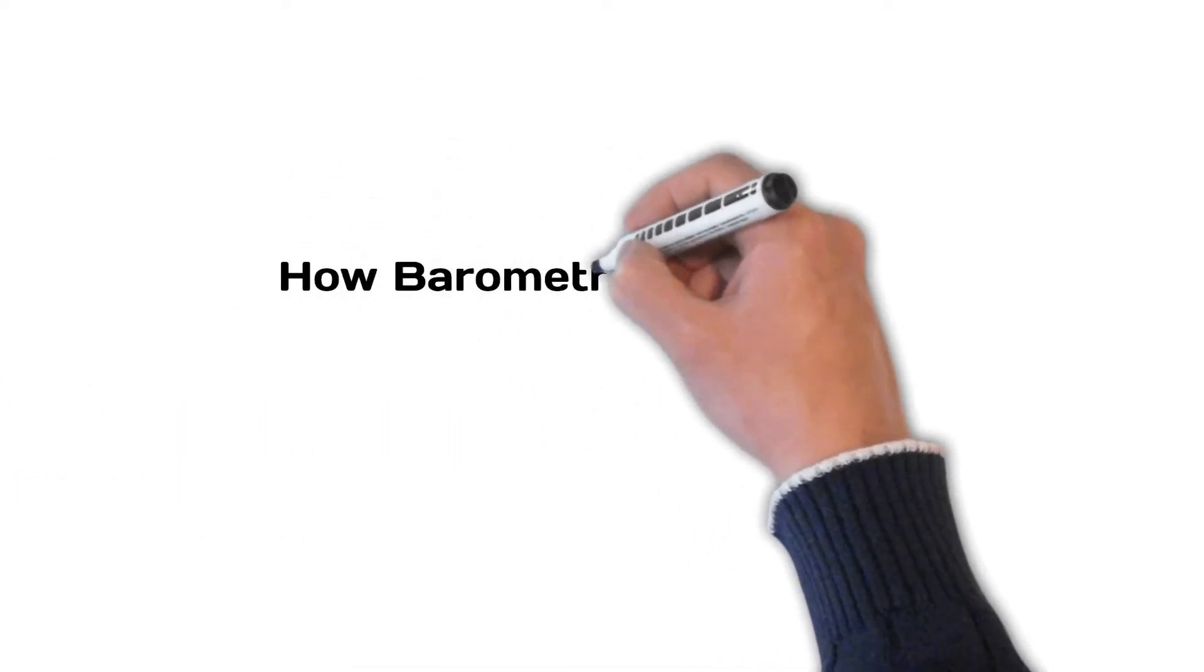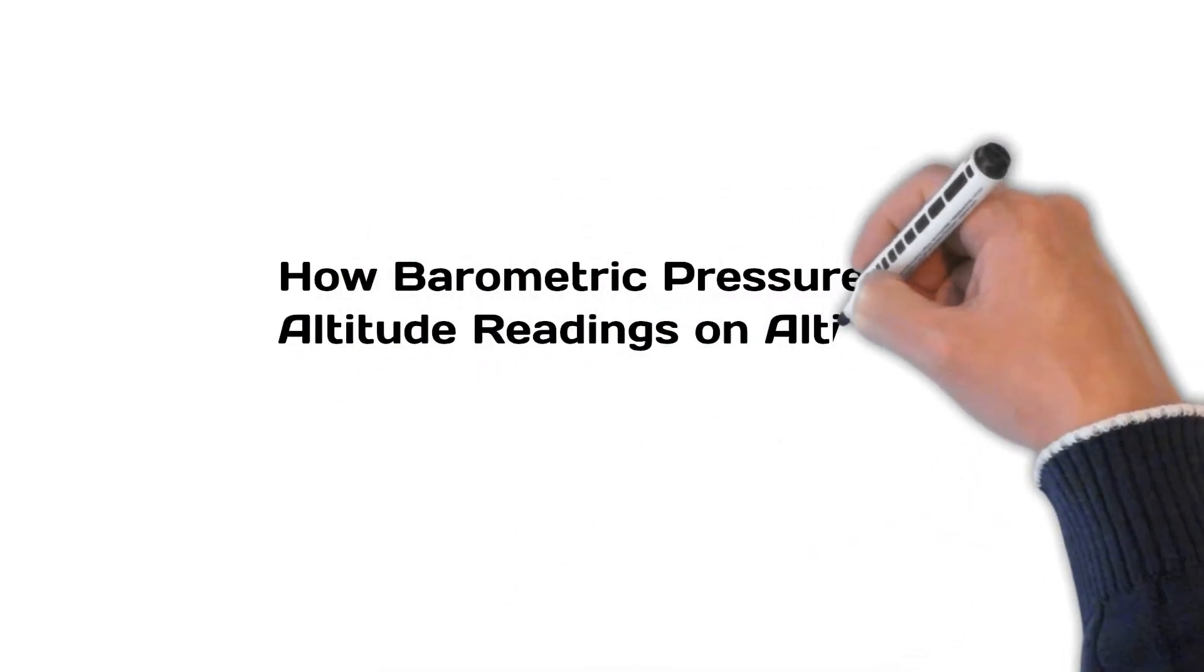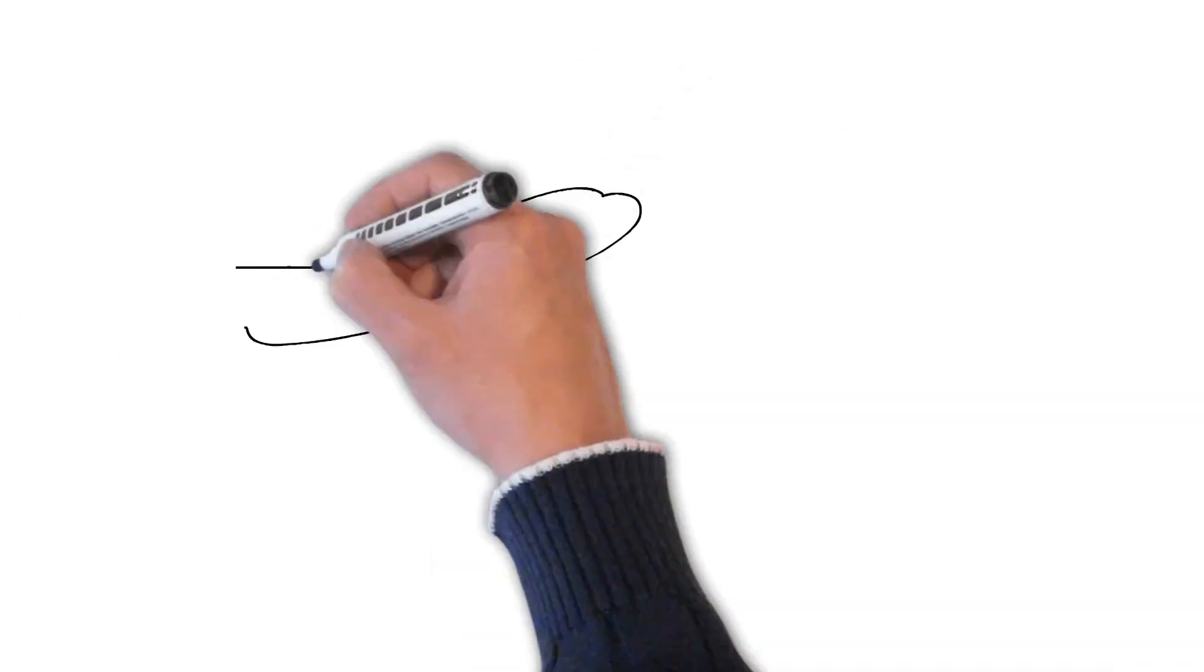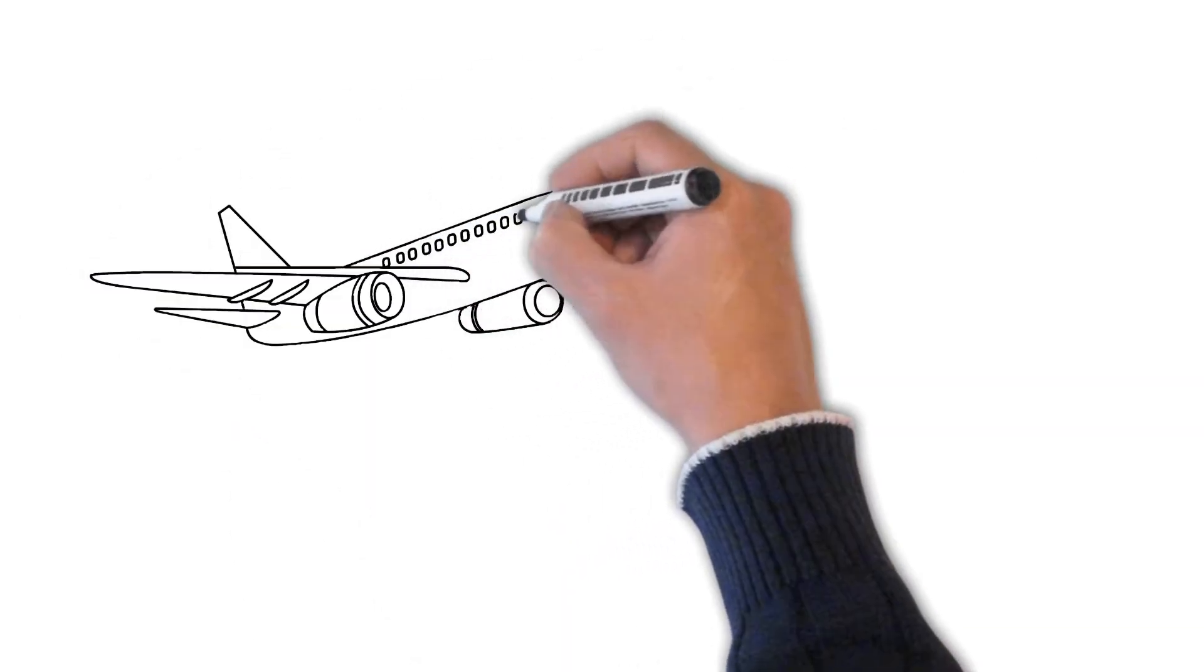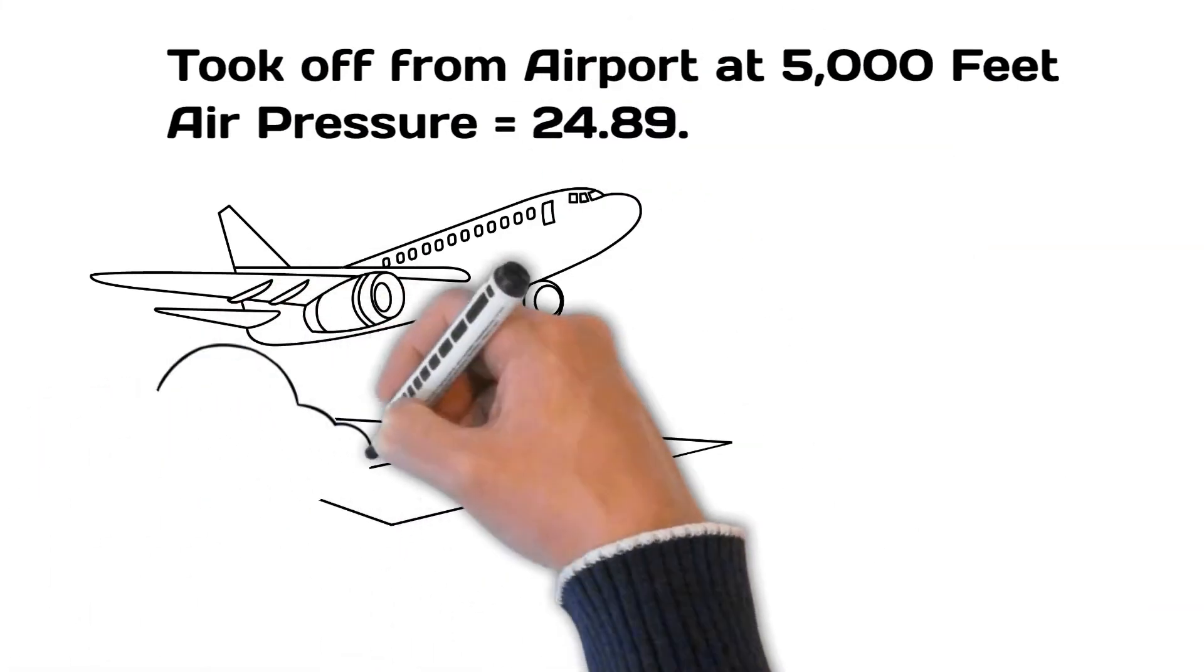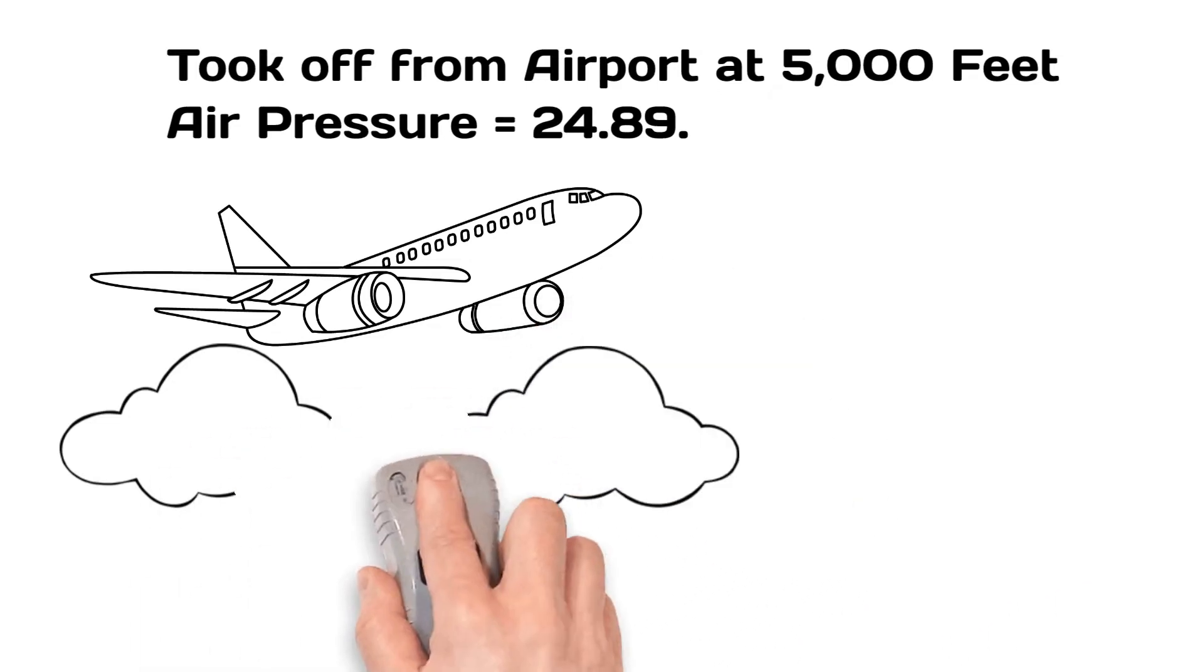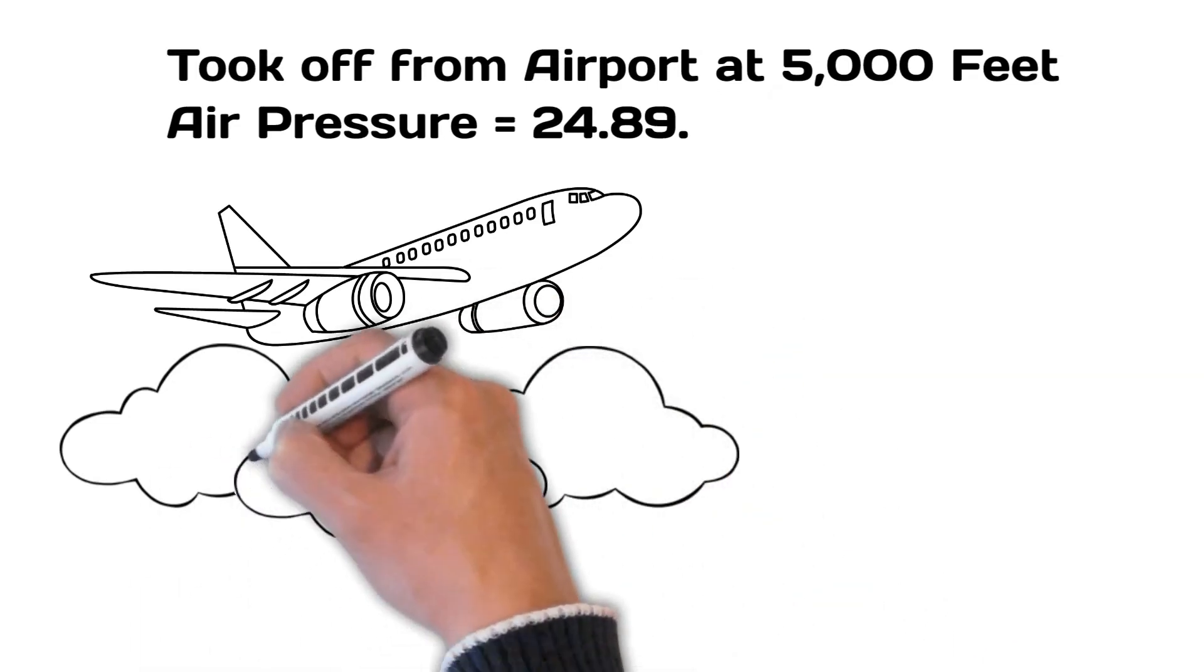How barometric pressure affects the altitude readings on an altimeter. Suppose we took off from an airport with a field elevation 5,000 feet above sea level without adjusting the altimeter. The air pressure at 5,000 feet is about 24.89 inches of mercury.